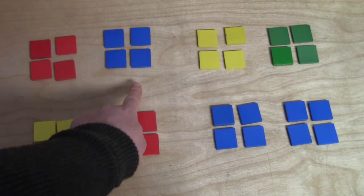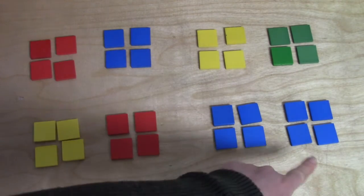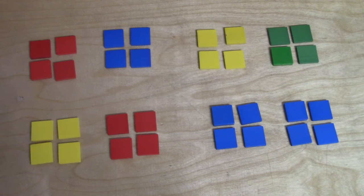How many groups of four do we have now? Count them. One, two, three, four, five, six, seven, eight. Eight groups of four.